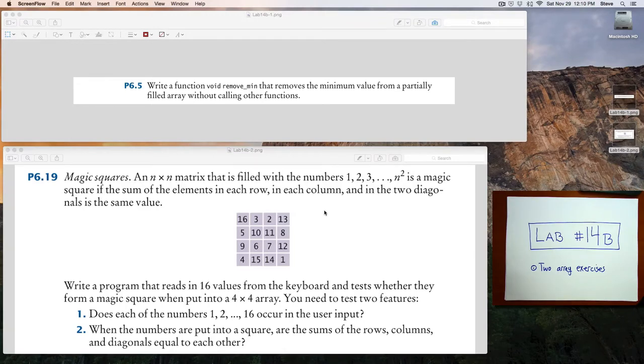In the first one, you're going to be passing an array to a function called remove_min that's going to remove the minimum value from that partially filled array. That function should take as parameters an array and the number of values in the array, so not the size of the array, but the size of the data that is in the array. If the array is empty or has a size of zero, then the function should do nothing.